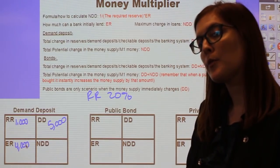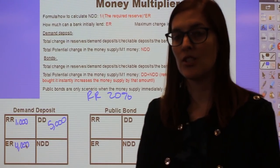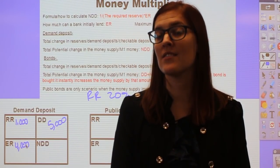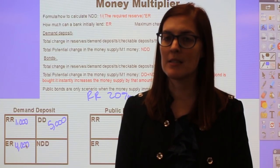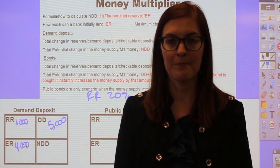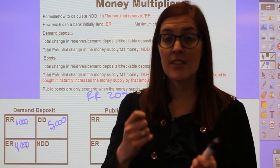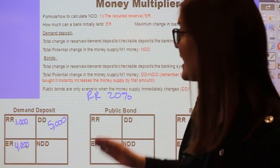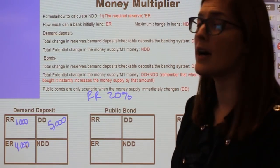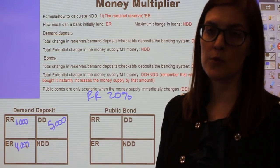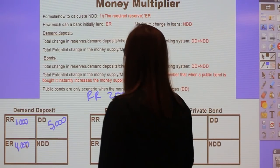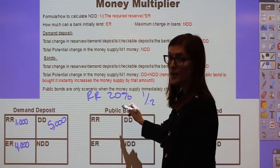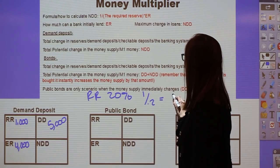What the money multiplier formula does is show: if my money goes from bank to bank to bank, trickling all the way down to zero, how much could the money supply potentially change? Instead of adding it all up bank by bank, we use the formula: 1 over the required reserves in decimal format. So in this case, 1 over 0.2 — because of the 20% required reserves — which equals 5.